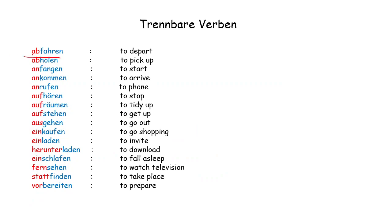Here are more examples of separable verbs: abfahren — to depart, abholen — to pick up, anfangen — to start, ankommen — to arrive, anrufen — to call, aufhören — to stop, aufräumen — to tidy up, aufstehen — to get up, ausgehen — to go out, einkaufen — to go shopping, einladen — to invite, herunterladen — to download, einschlafen — to fall asleep. Note: if it's only 'schlafen', it means 'to sleep', but 'einschlafen' means 'to fall asleep'.